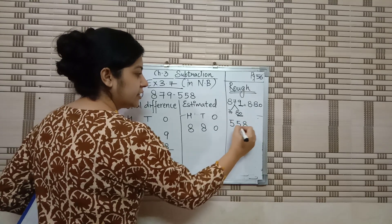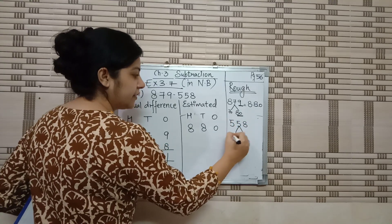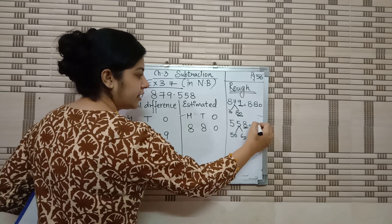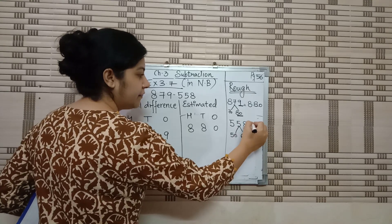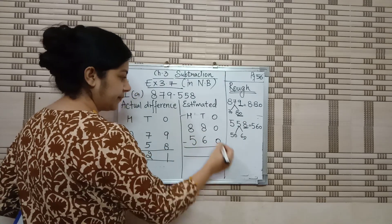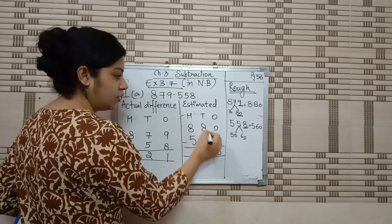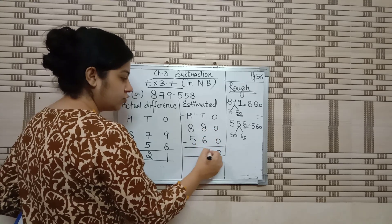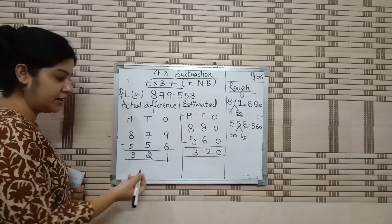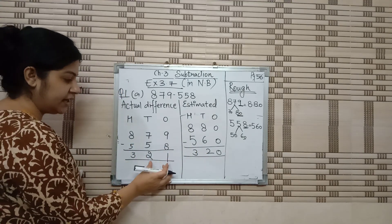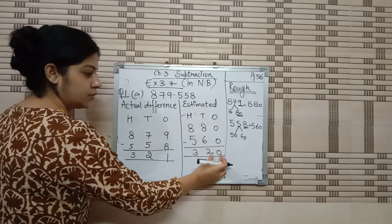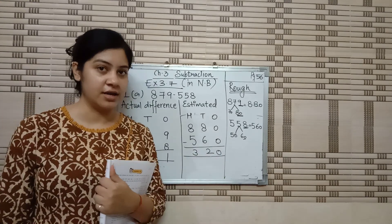Next, 558 — at the tens place it can be 50 or 60. Since 8 is given, which is greater than 5, we round to the next tens, and the hundreds digit stays as it is. So our second rounded term is 560. Now subtract both: 0 minus 0 is 0, 8 minus 6 is 2, 8 minus 5 is 3. Now let's verify — we check 321, and rounding 21 gives us 20, so our answer is correct.